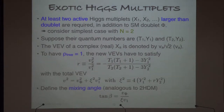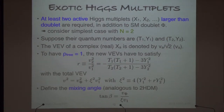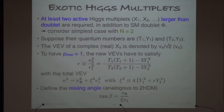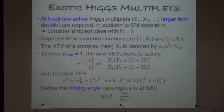We consider the simplest case of adding two exotic representations with isospin quantum numbers (T1, Y1) and (T2, Y2). For a complex representation the vev is v/√2, and for a real one it uses the standard normalization. To get rho equal to one at tree level, the vacuum expectation values of the two representations must satisfy a ratio given by their quantum numbers; we call this ratio r. The total vev must sum to 246 GeV including both the doublet and exotic contributions, and the mixing parameter is defined as the ratio of those vevs.